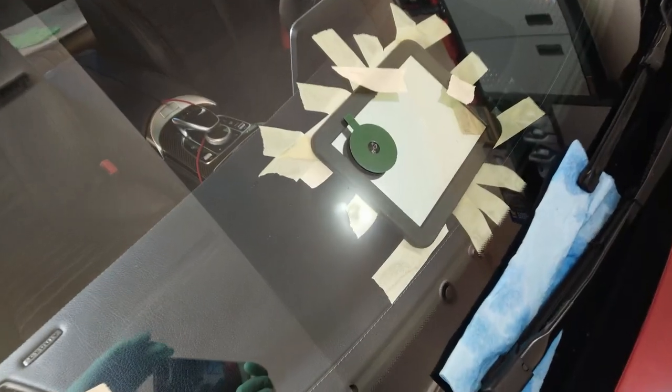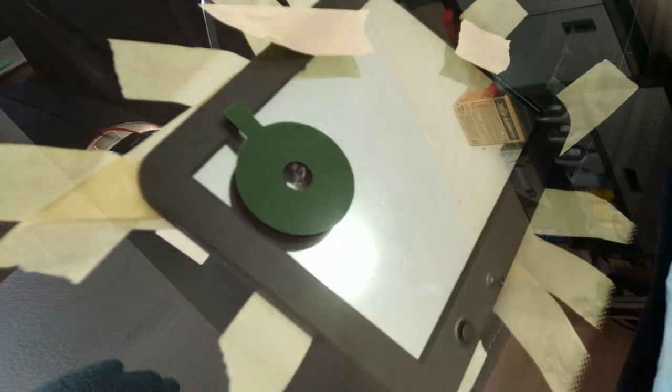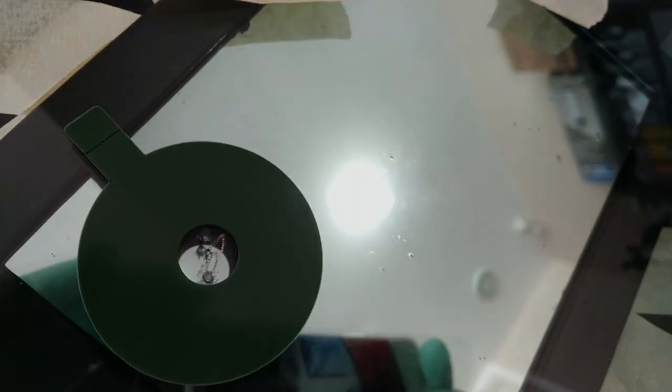A little background before we start. The crack I have on the windshield is small, but I wanted to use a method where the ends of the cracks are drilled out and filled with resin so that it helps to prevent a small crack from spreading.